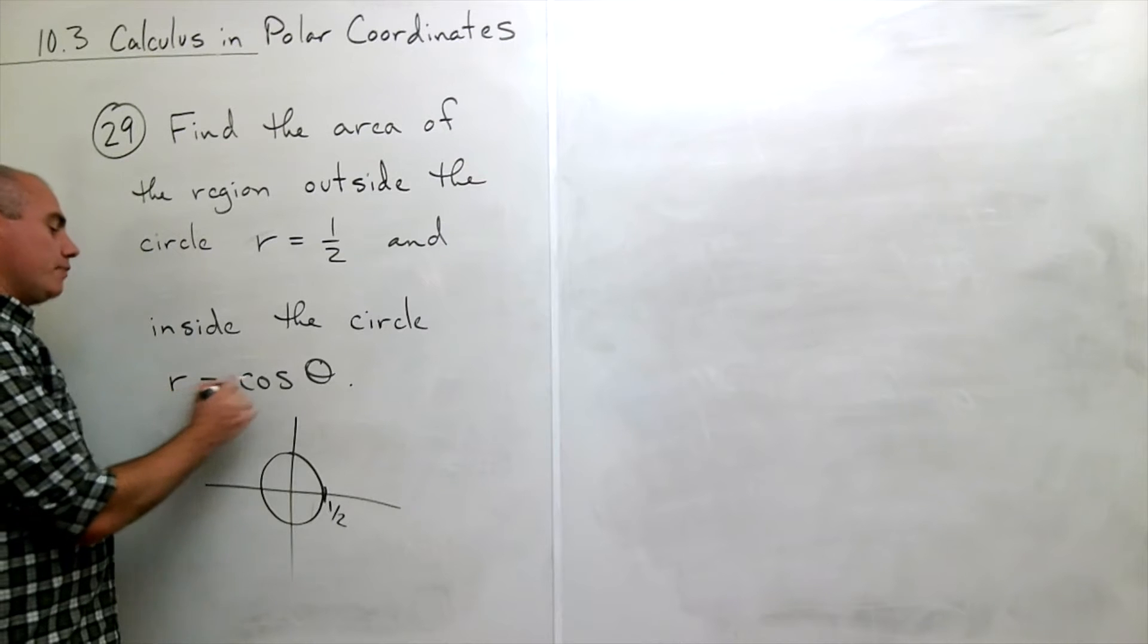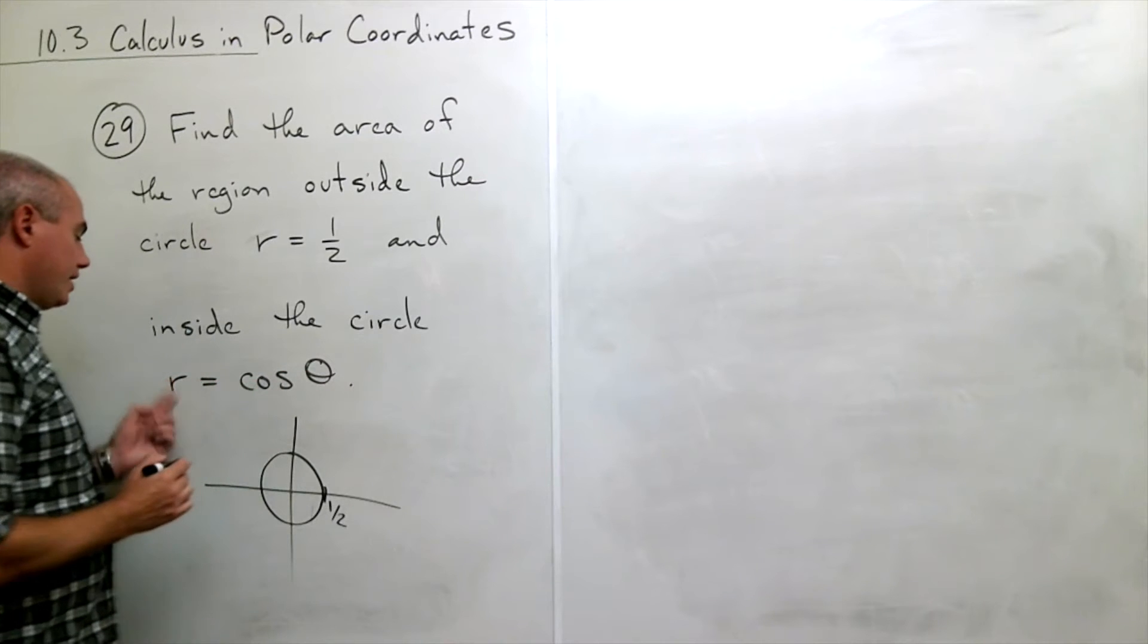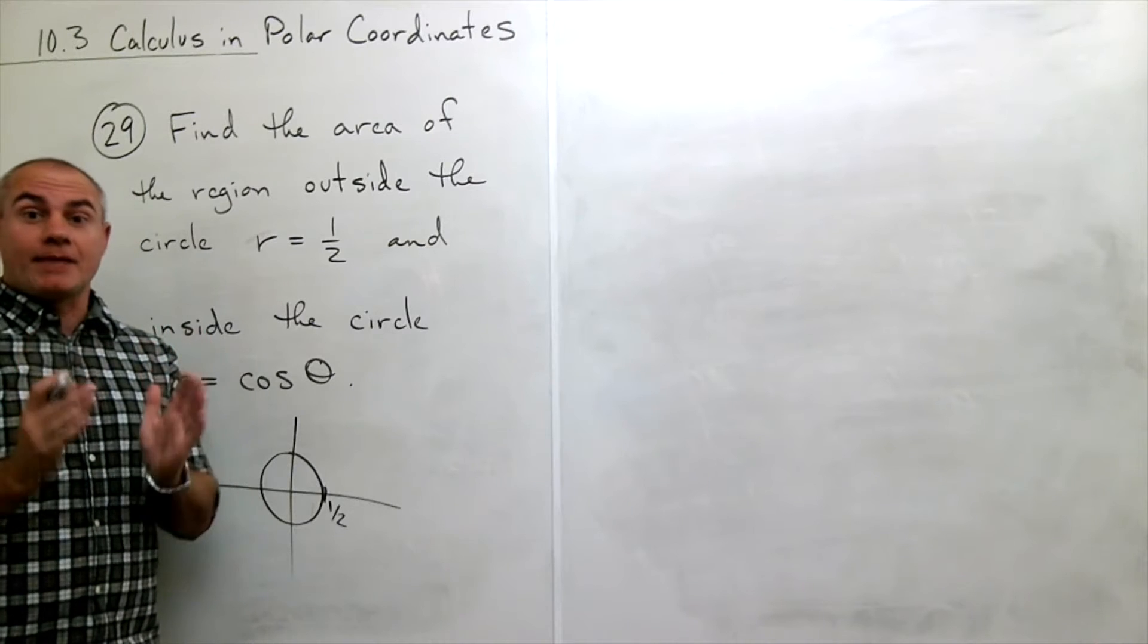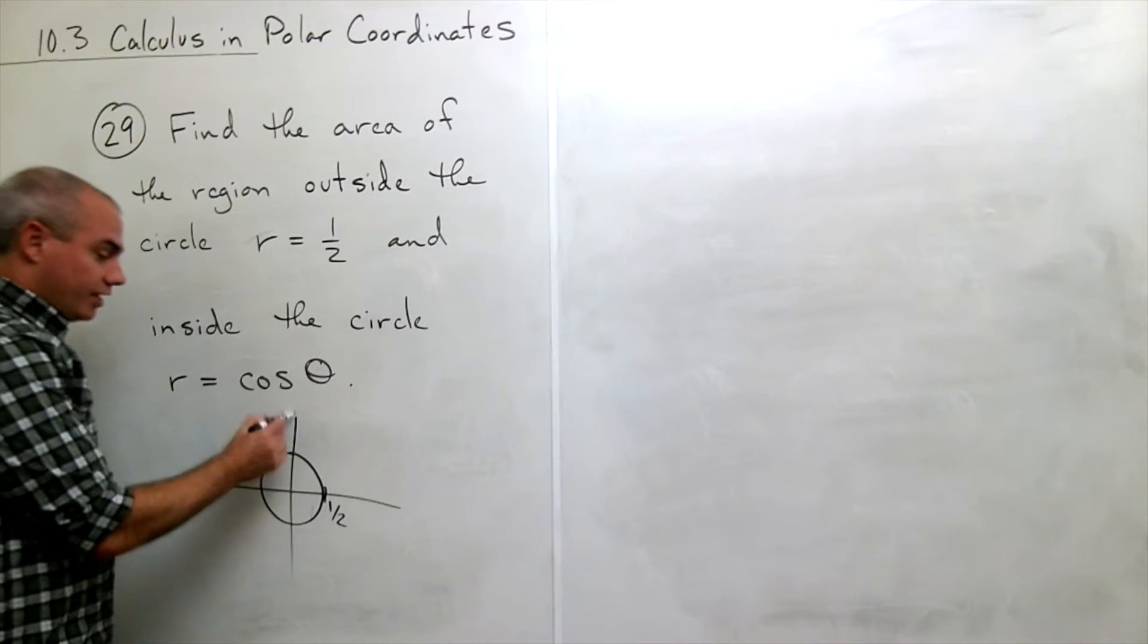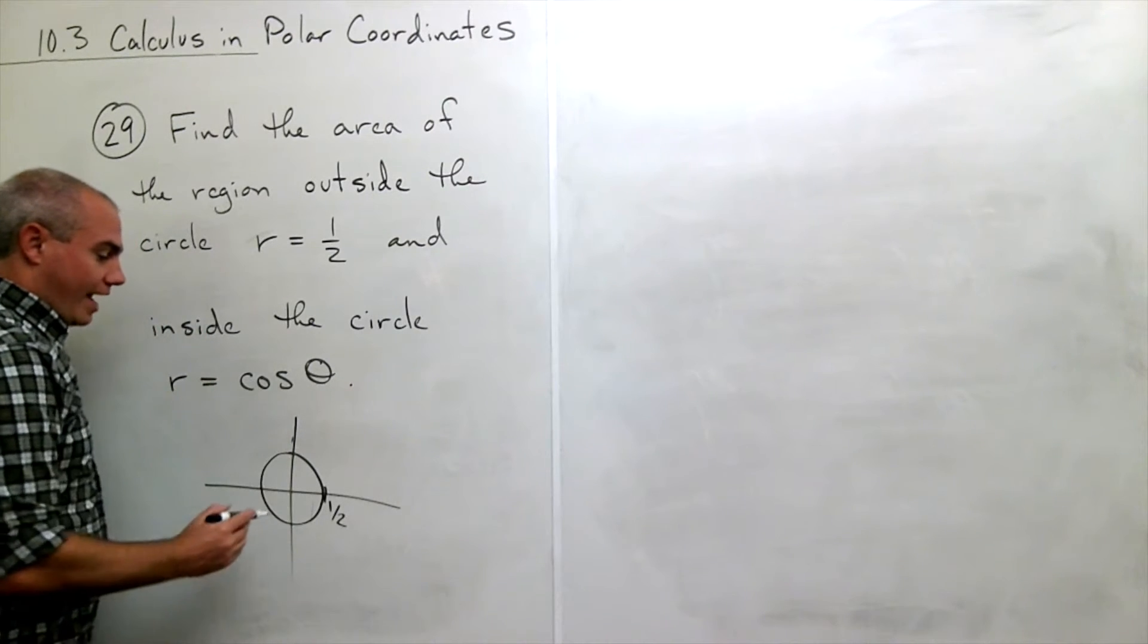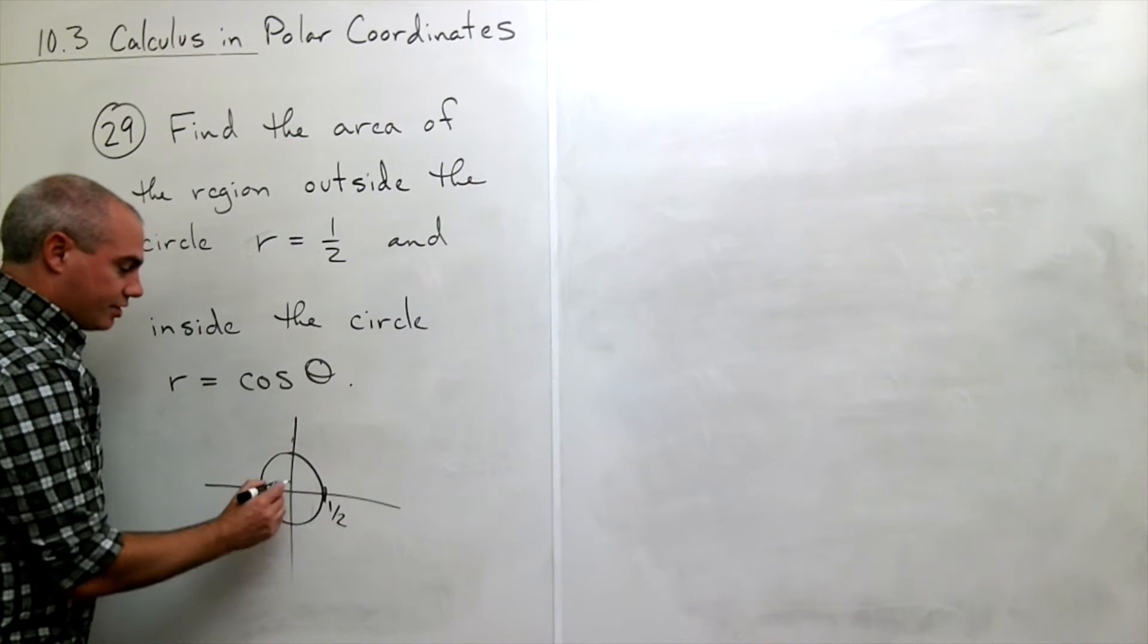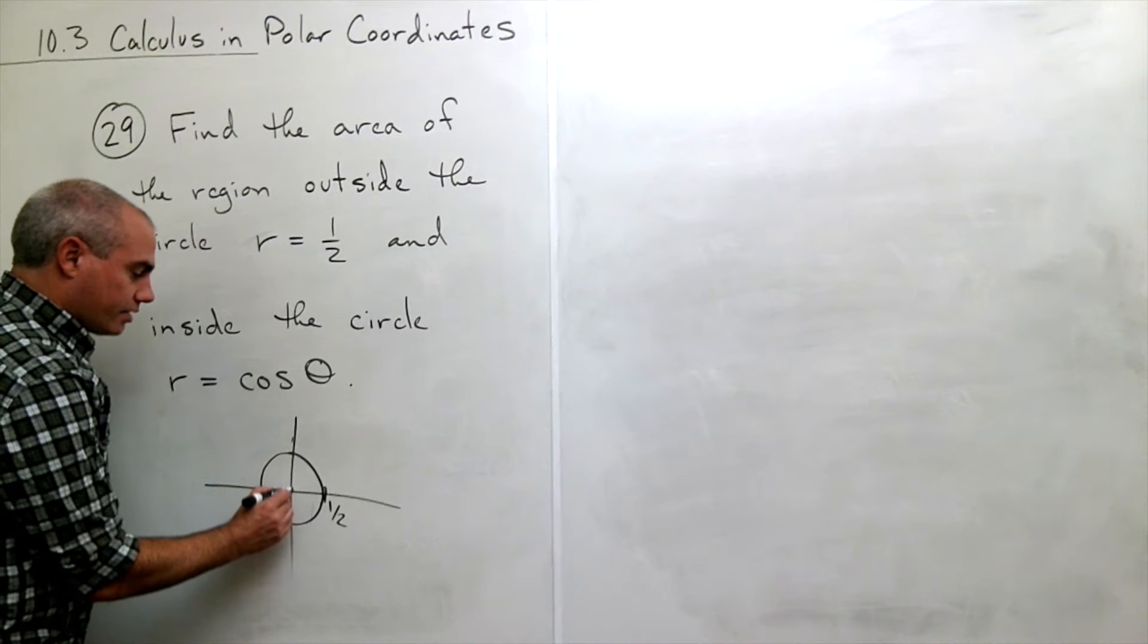Alright, and r equals cosine of theta is a circle also of radius one-half. It has diameter 1 and it's tangent to the y axis. So it's sitting over here on the x axis tangent to the y axis.